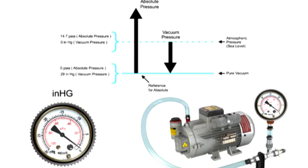At sea level, the measurement scale indicates zero inches of mercury, and at pure vacuum, the measurement scale indicates 29.92 inches of mercury.